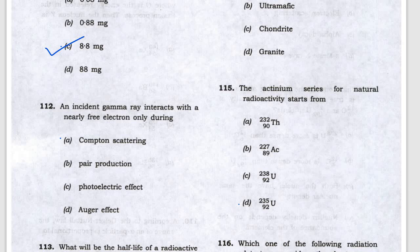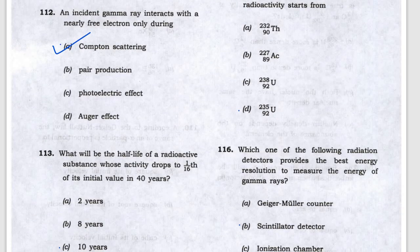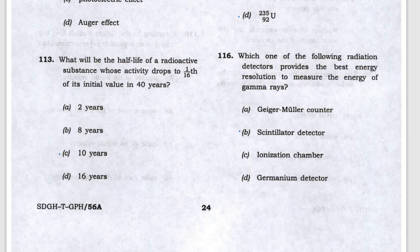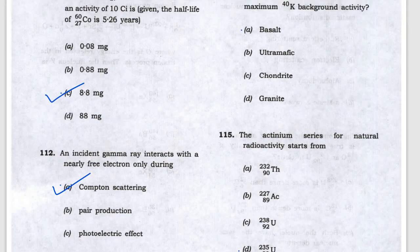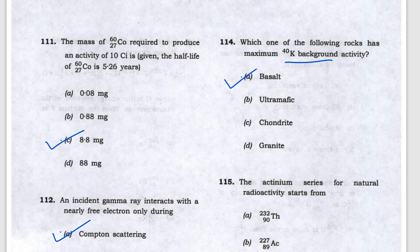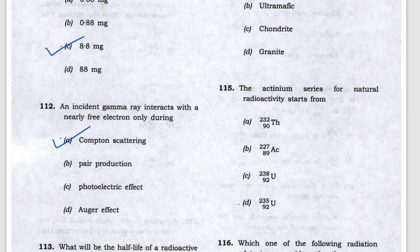Incident gamma ray only interacts with nearly free electrons during Compton scattering. The half-life of the radioactive material is 10 years. For background radiation, the answer is basalt. The actinium series is uranium-235.